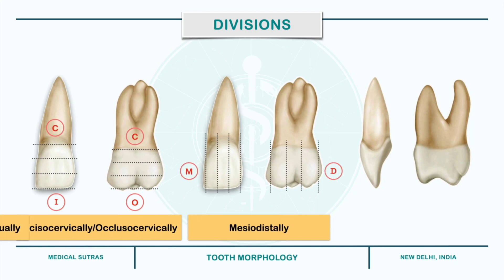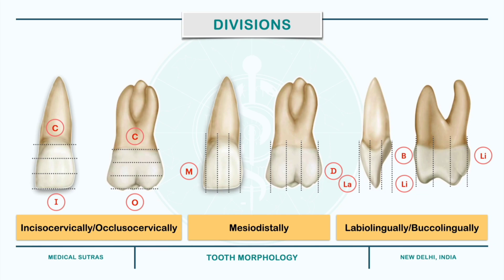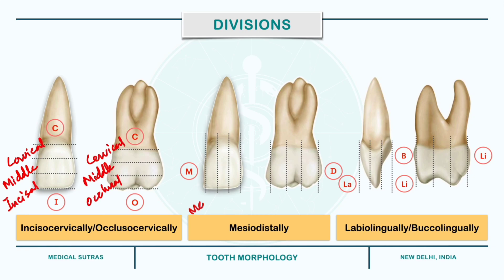Incisocervically, the crown is divided into incisal, middle, and cervical thirds in anterior teeth, while in posterior teeth the crown is divided into occlusal, middle, and cervical thirds. Mesiodistally, the crown is divided into mesial, middle, and distal thirds in both anterior and posterior teeth.